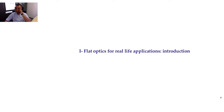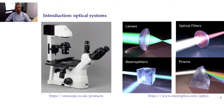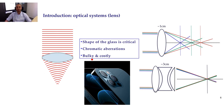Today I'm going to talk about flat optics for real life applications. We are already familiar with classical optical components like lenses, optical filters, splitters, and prisms. A piece of glass needs to be carefully engineered in order to focus light. How a lens works is very simple: light propagating hits the lens — a piece of glass engineered such that light is delayed in the center and faster at the edges — and this allows you to focus light at a specific position.